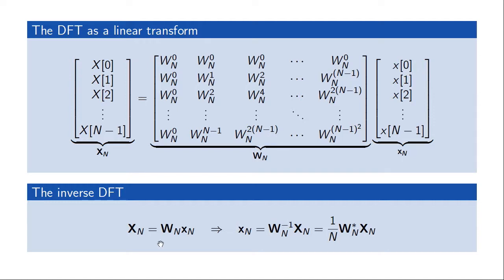We can use this to show what the inverse DFT has to be. If the discrete Fourier transform is given by this linear mapping, then the inverse is simply the inverse mapping: the inverse of the matrix W_N times X(N). Working out the mathematics, this is nothing else than the inverse formula for the DFT, which is 1 over N times the conjugate of W_N times the vector of transform coefficients.